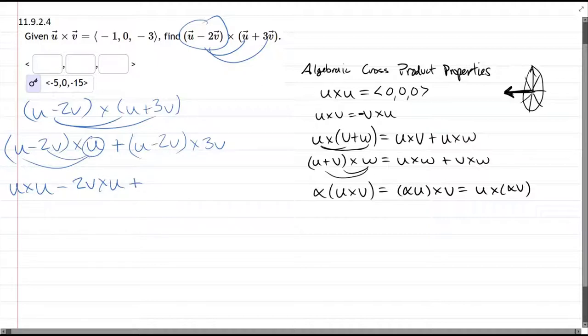So the reason I'm saying that, because right here, u is on the left, 3v is on the right, so it's u cross 3v minus 2v cross 3v. So it looks like we have four cross products to compute.